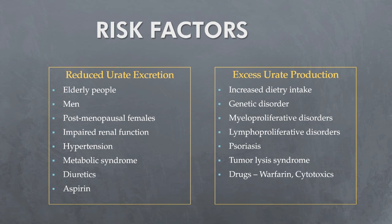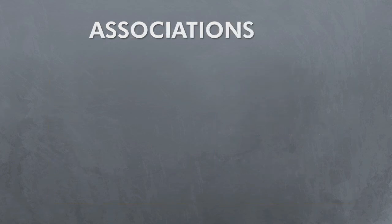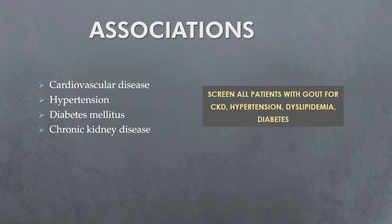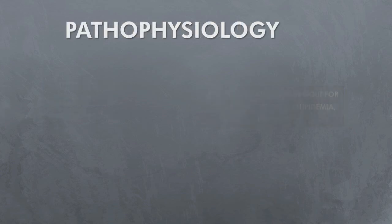Gout is associated with cardiovascular disease, hypertension, diabetes mellitus, and chronic renal failure, and it is an independent risk factor for mortality from cardiovascular and renal diseases. Therefore, screen all patients with gout for chronic kidney disease, hypertension, dyslipidemia, and diabetes.